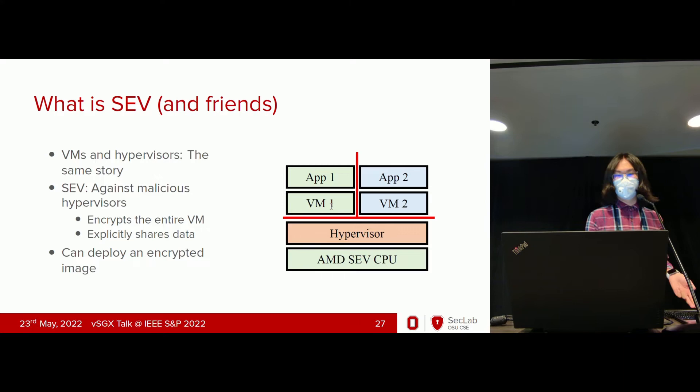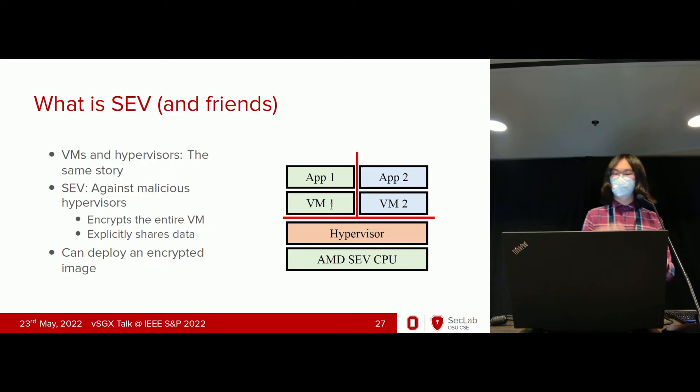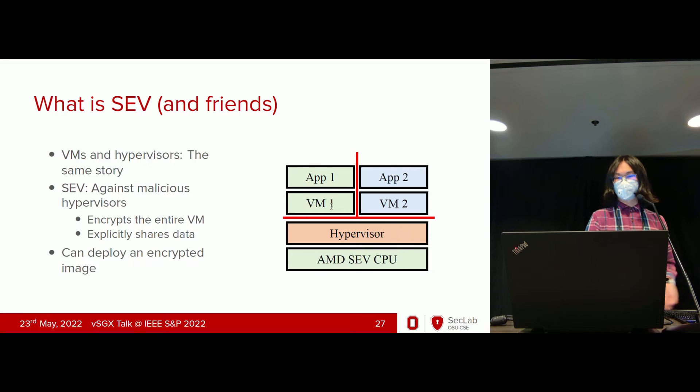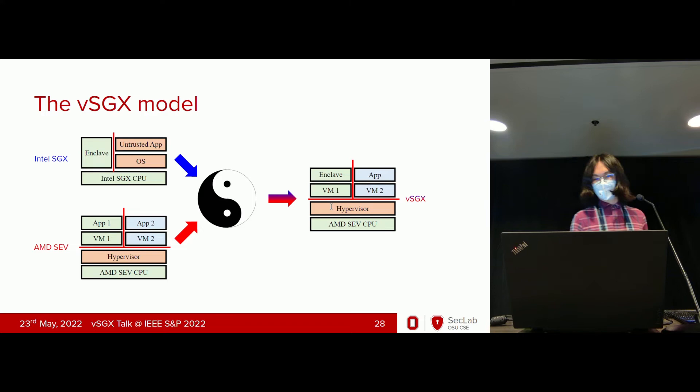For SEV it's quite the same story as SGX, but this time it's about VMs and hypervisors. Hypervisors in the past could access VMs randomly, but SEV defends against malicious hypervisors by encrypting the entire VM. The VM can explicitly share data to the outside, but not vice versa — the hypervisor can't access the protected content. It also allows deploying an encrypted image.